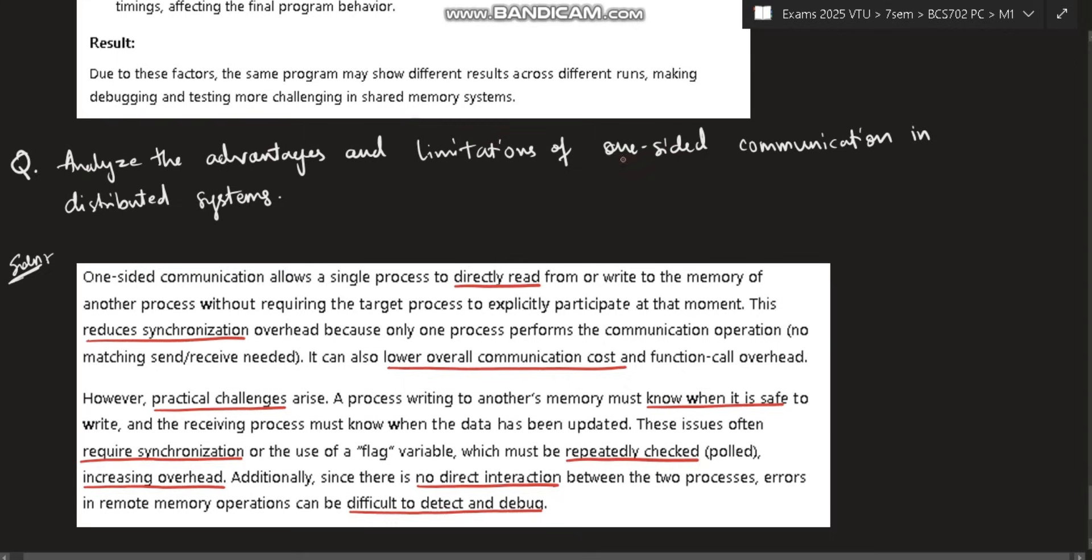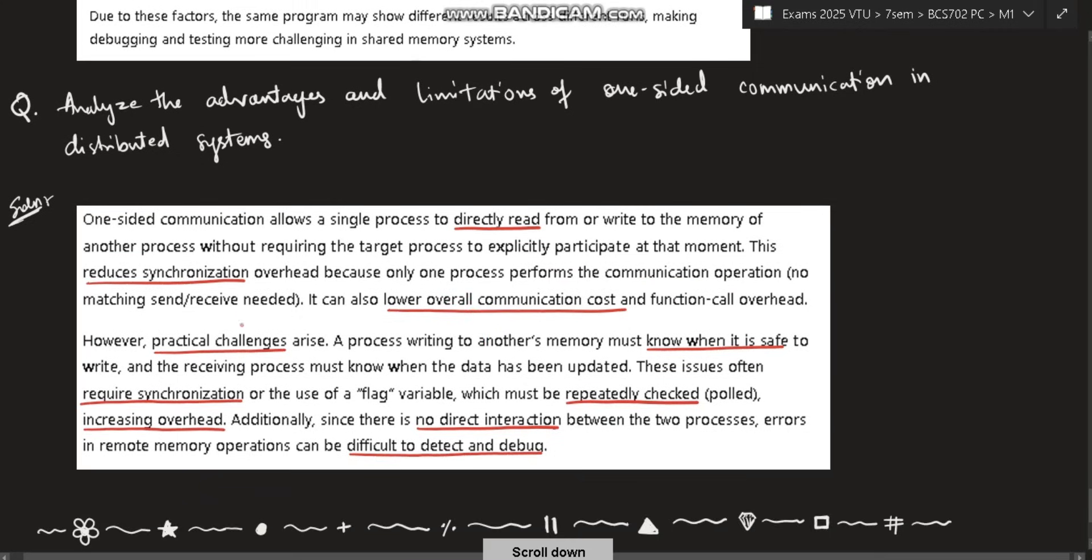Last question is analyze the advantages and limitations of one-sided communication in distributed system. One-sided communication allows single processor to directly read or write from the memory of another process without requiring the target process to explicitly participate at that moment. So direct read and write can happen, and this reduces synchronization overhead because only one process performs the communication operation, no other process are involved, and it also lowers the overall communication cost. But there are practical challenges such as the other process must know when it is safe to write in order to avoid the chances of writing when the other process is sending the data. That means it will alter the data and send it. It also requires synchronization to make sure when some process is reading some data, no need to edit it. Or use of a flag variable which must be repeatedly checked, increasing the overhead. And since there is no direct interaction between the two processors, errors in the remote memory option can be difficult to detect and debug. That is the advantage and limitation of one-sided communication in distributed system.